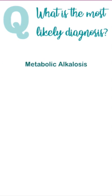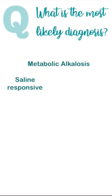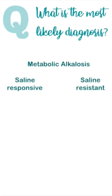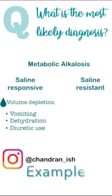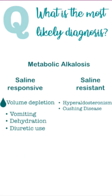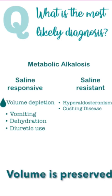Metabolic alkalosis can either be saline responsive or saline resistant. If metabolic alkalosis is caused by volume depletion, by giving saline, the issue gets resolved — this includes vomiting, dehydration, and diuretic use. But if metabolic alkalosis is caused by things like hyperaldosteronism and Cushing disease, it won't respond to saline because the volume in the body is not low.